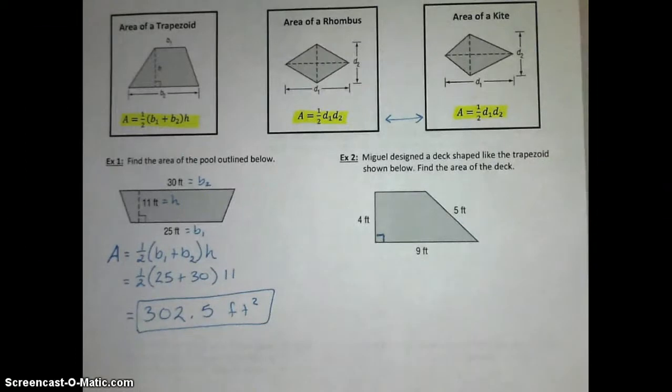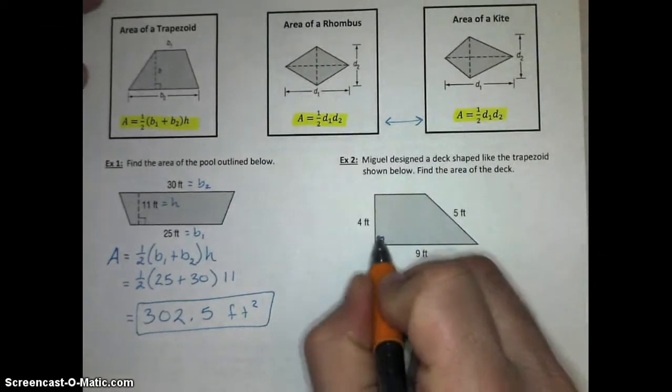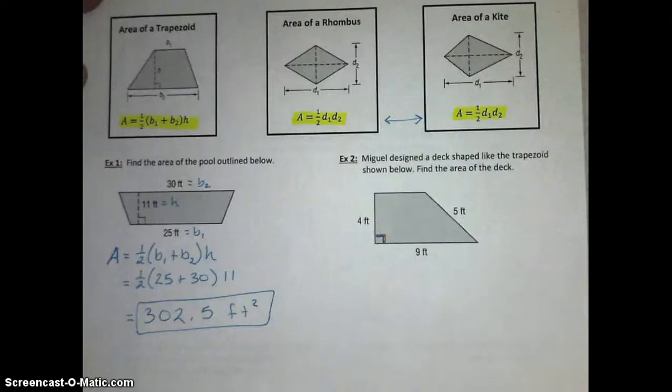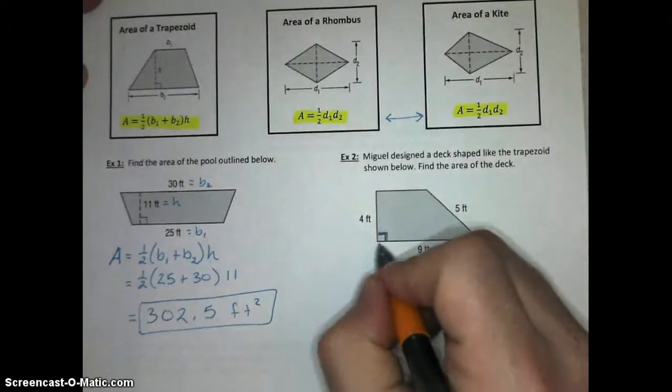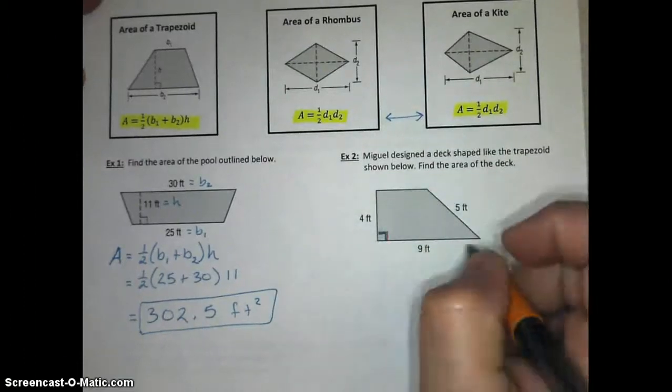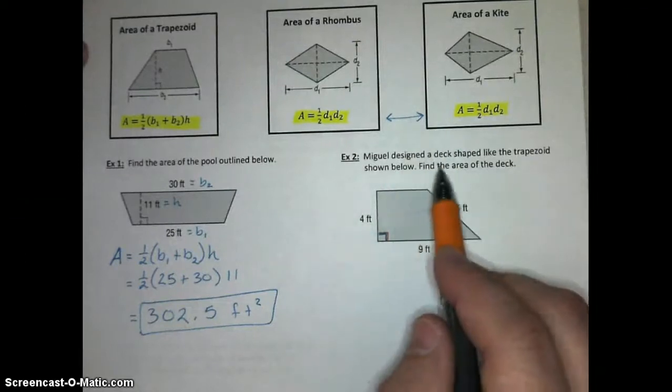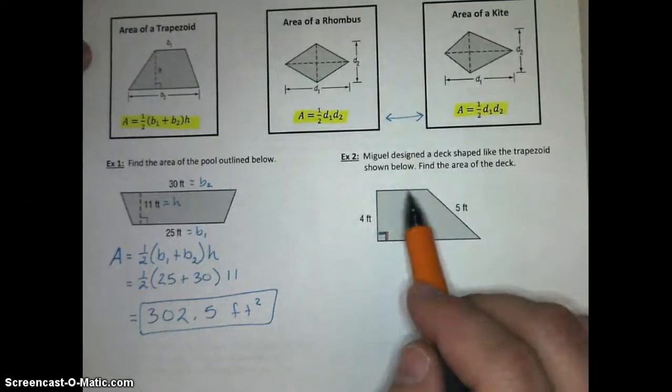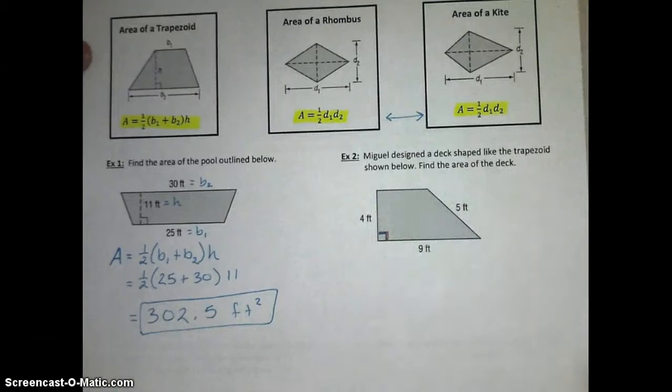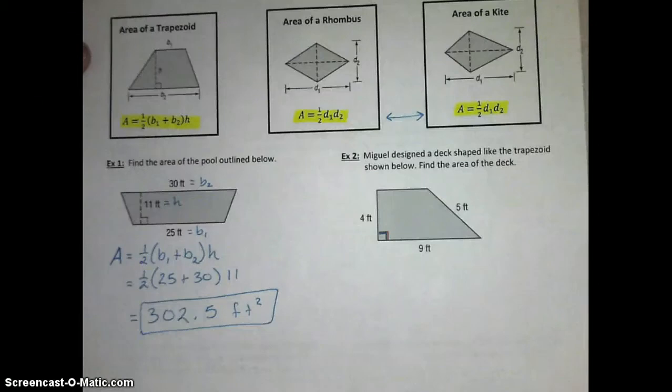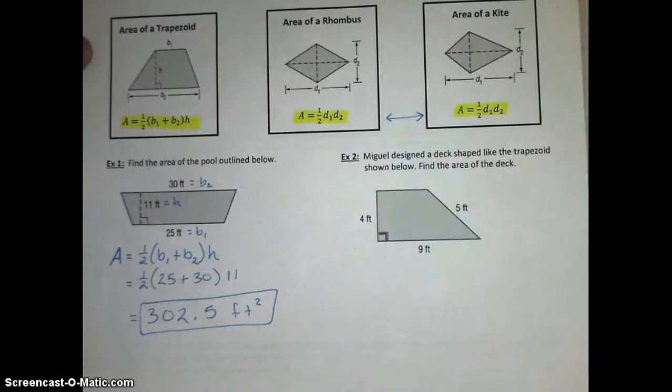In example 2, there's part of this that actually needs to be included in the diagram, but they did not include, and that's our right angle here. We need to know that that is a right angle in order to do this problem, otherwise it becomes very difficult. Miguel is designing a deck shaped like this trapezoid. Find the area of the deck. This might be important if he needs to know how many square feet of boards to cover the deck.